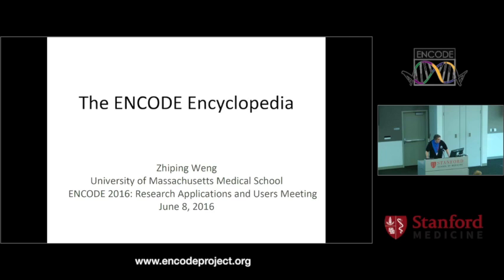Sometimes the strips are under the table, so if you look under your table. A couple people have had some issues with the Wi-Fi. Pretty much everyone should be on. If you have any trouble, talk to me or talk to Chris or find someone else as a DCC. We can get you on. The first speaker in this session is Ziping Wang from the University of Massachusetts Medical Center. She's the ENCODE head of the Data Analysis Center, and she's going to talk about the ENCODE Encyclopedia.